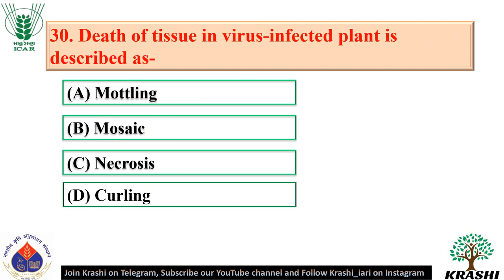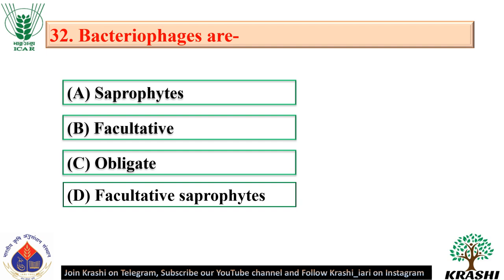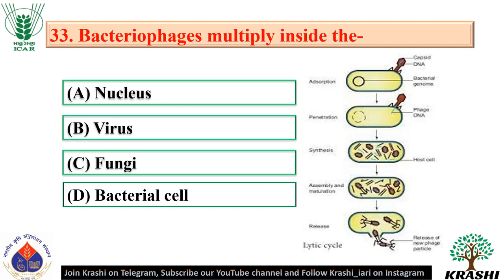Question number 30: Death of tissue in virus-infected plant is described as necrosis — option C. Question number 31: A virus particle with both nucleic acid and protein coat is known as a virion. Question number 32: Bacteriophages are obligates. Question number 33: Bacteriophages multiply inside the bacterial cell.